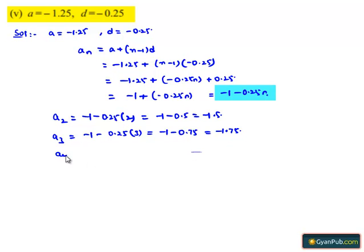And a₄, the fourth term, is equal to -1 - 0.25(4), that is equal to -1 - 1, which is equal to -2.